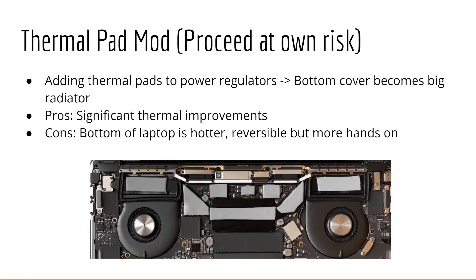My last idea is the thermal pad mod, and this is a change I would advise you to proceed with at your own risk. This change involves adding thermal pads to the power regulators on the bottom of your laptop. When these thermal pads come in contact with the bottom cover, it allows the bottom cover to act as a radiator, moving heat to a different location and allowing more heat to be dissipated. I have tried this mod and there are significant thermal improvements. The cons are that the bottom of the laptop tends to have hotter temperatures, and although this change is reversible, it requires a more hands-on approach.